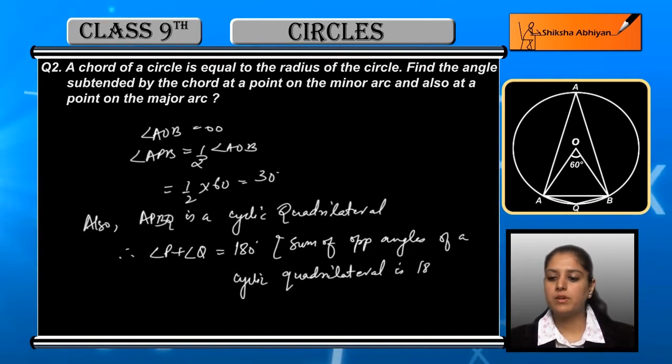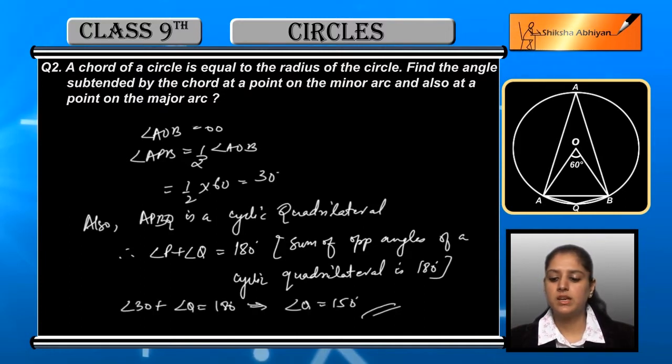Now we have angle P and we have to find angle Q. So if we find the value of P and put it in, we can subtract from 180 to get Q. So 30 degrees plus angle Q is equal to 180 degrees, so angle Q is equal to 150 degrees.